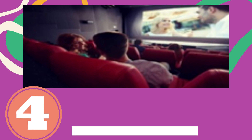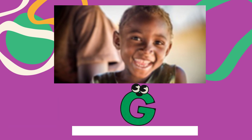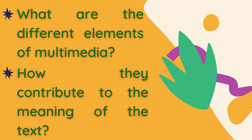How about this one? The people are watching a film — that is video. And this one is an image — that is graphic. Again, let's review. The different elements of multimedia are audio, video, animation, text, and image or graphics.